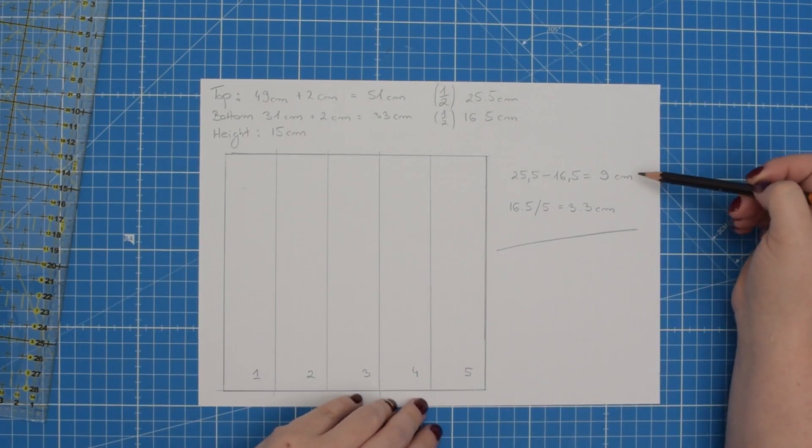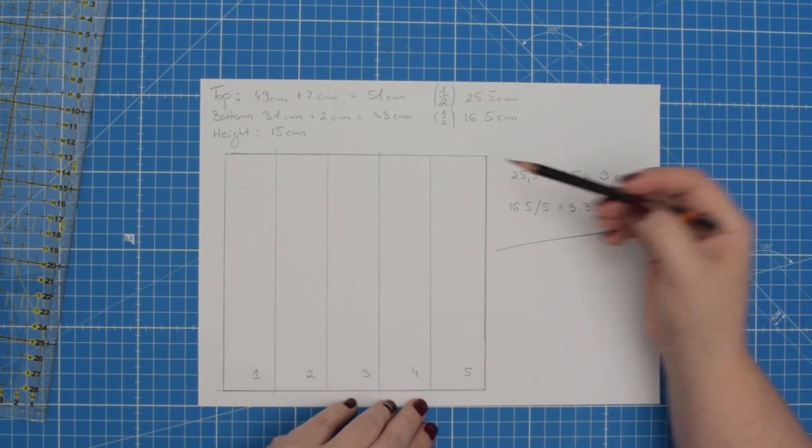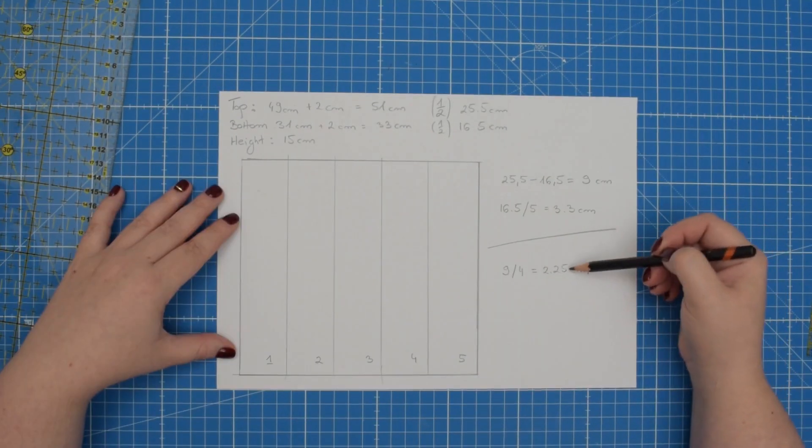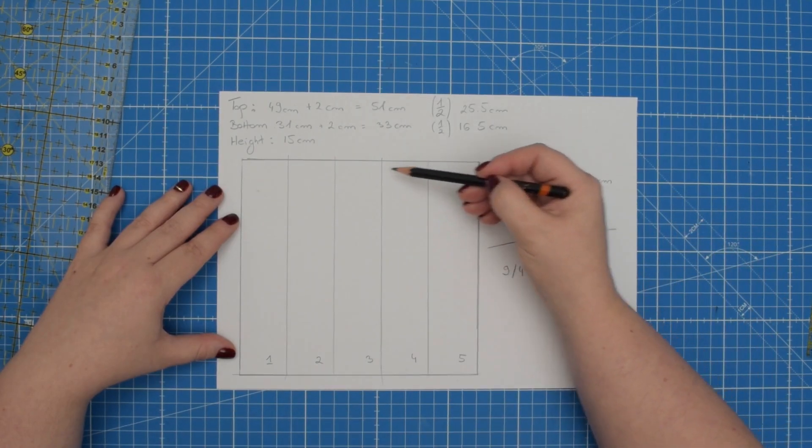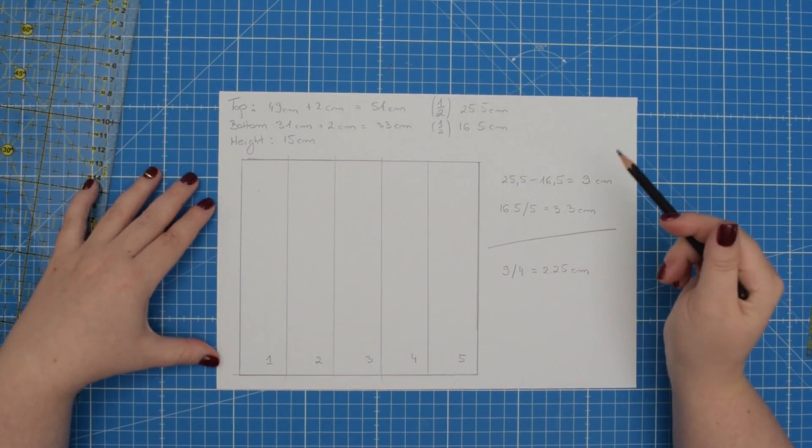Next you will take the difference between the top and bottom circumference and divide it by the number of lines that you have drawn. For me this is over 2 cm which means I need to add this amount equally between each section to create this nice shaping.